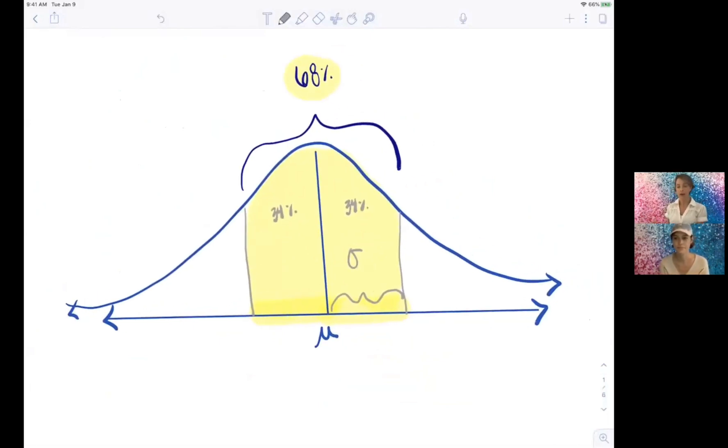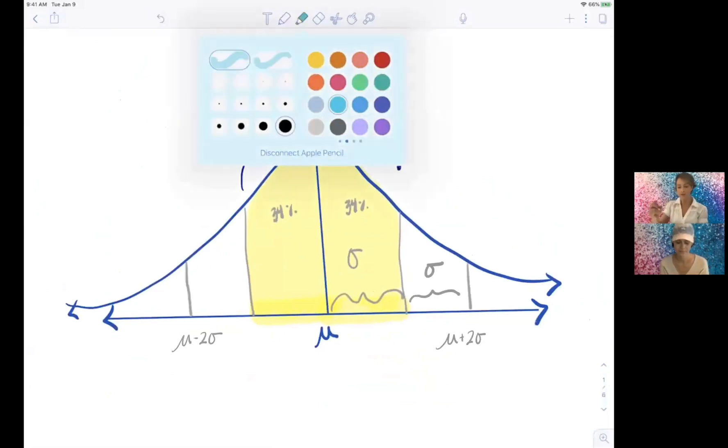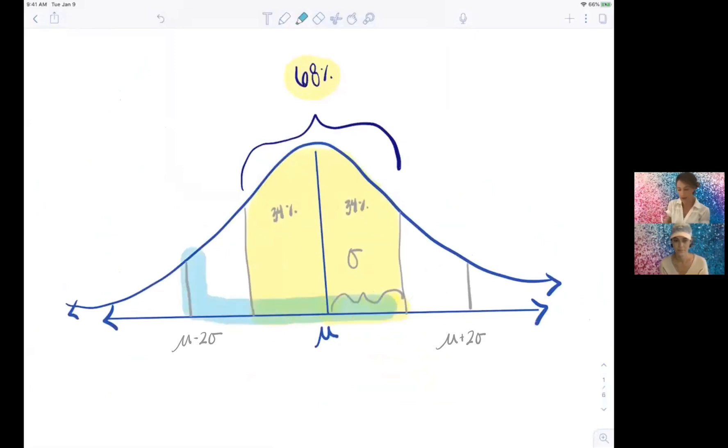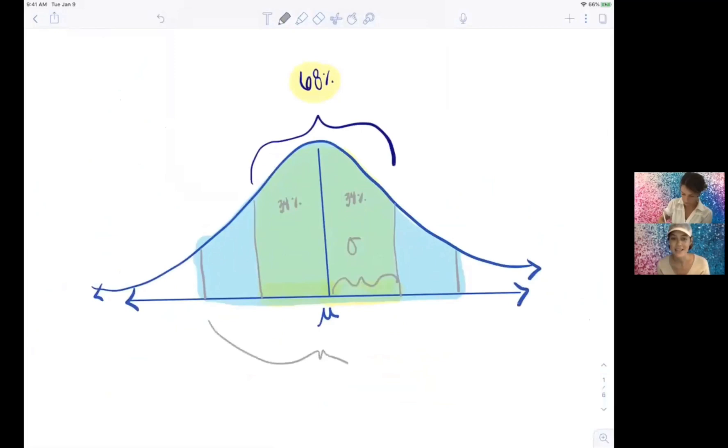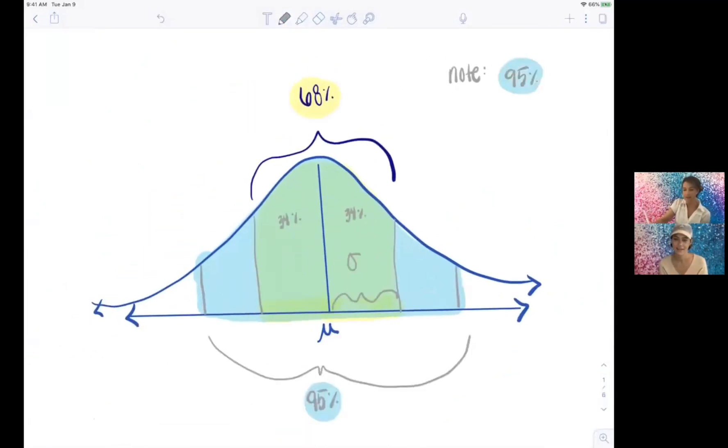Yep, the area under that curve, right. Okay, let's go out another standard deviation in both directions. Then what percentage of data do we have within two standard deviations of the mean? That is 95 percent.